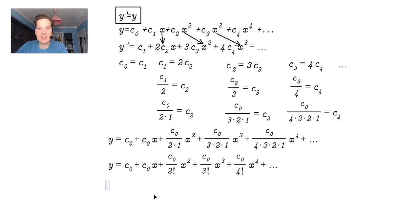Lastly, notice that c sub 0 is present in every term. So you can write y is equal to c sub 0. And then you have 1 plus x plus x squared over 2 factorial plus x cubed over 3 factorial plus x to the fourth over 4 factorial plus dot dot dot.